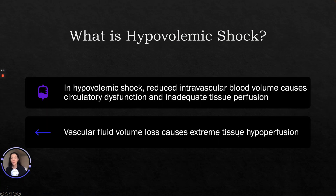So what is hypovolemic shock? It is a reduction in intravascular blood volume which causes circulatory dysfunction and inadequate tissue perfusion. Vascular fluid loss causes extreme tissue hypoperfusion.